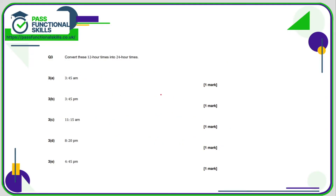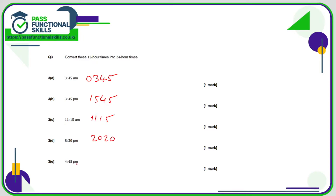Moving on to question 3 — we can use a calculator but there's not much need. Any time in the morning is left alone; in the afternoon from 1 o'clock onwards we add 12 to the hours. So 3:45 am in 24-hour clock is 03:45. For 3:45 pm we add 12 to the 3, giving 15:45. 11:15 am stays as 11:15. 8:20 pm becomes 20:20. 4:45 pm becomes 16:45.